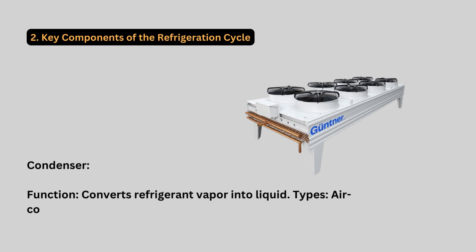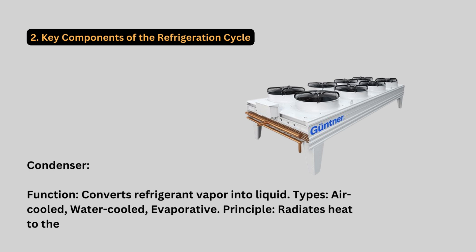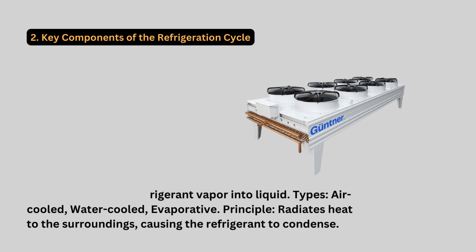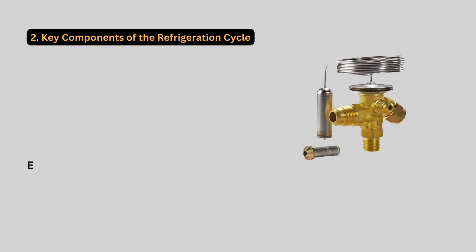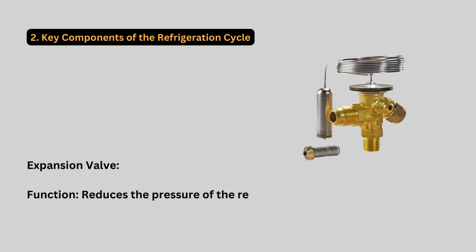Expansion valve. Function: reduces the pressure of the refrigerant. Types: thermostatic, electronic, capillary tubes. Principle: controls refrigerant flow and drops its pressure, which cools it down.